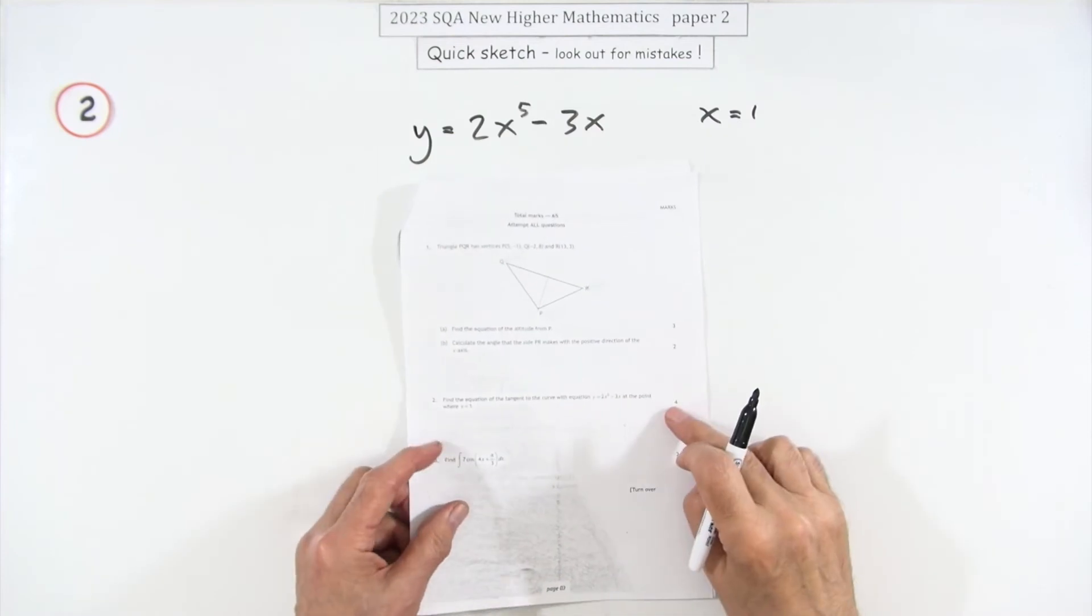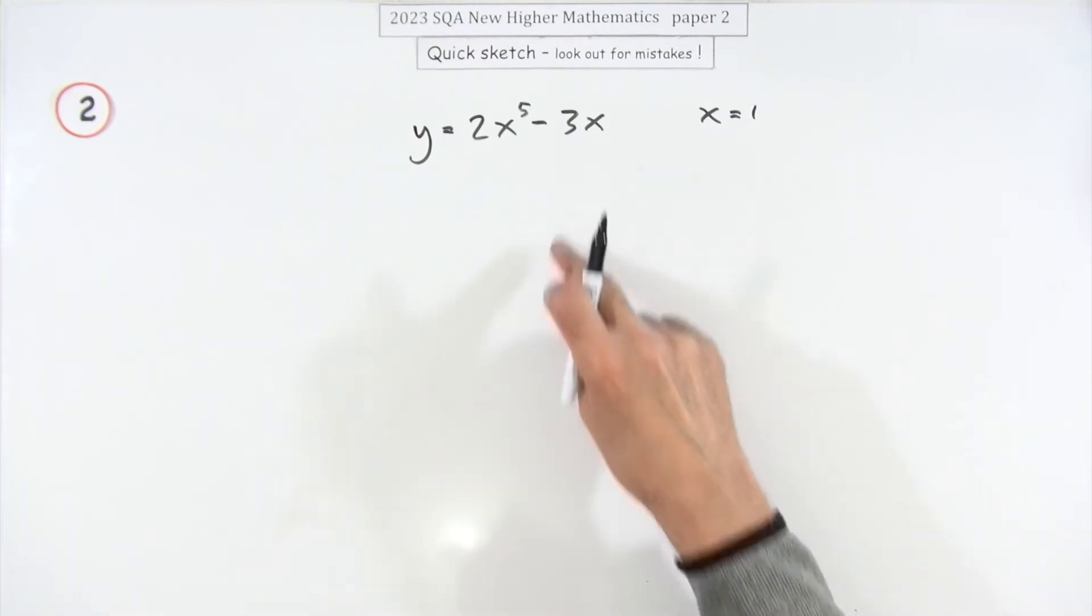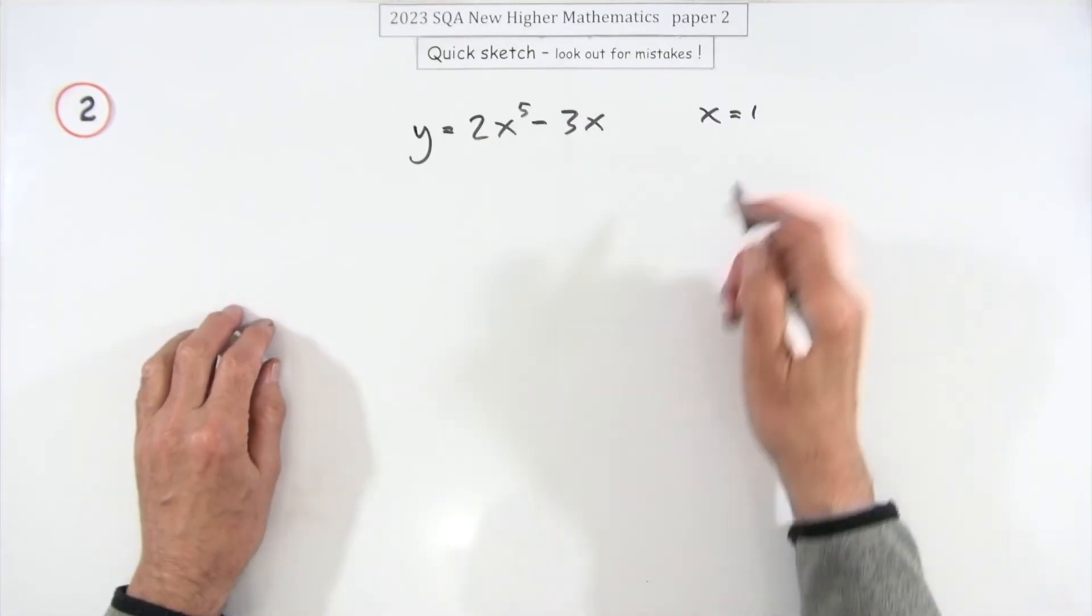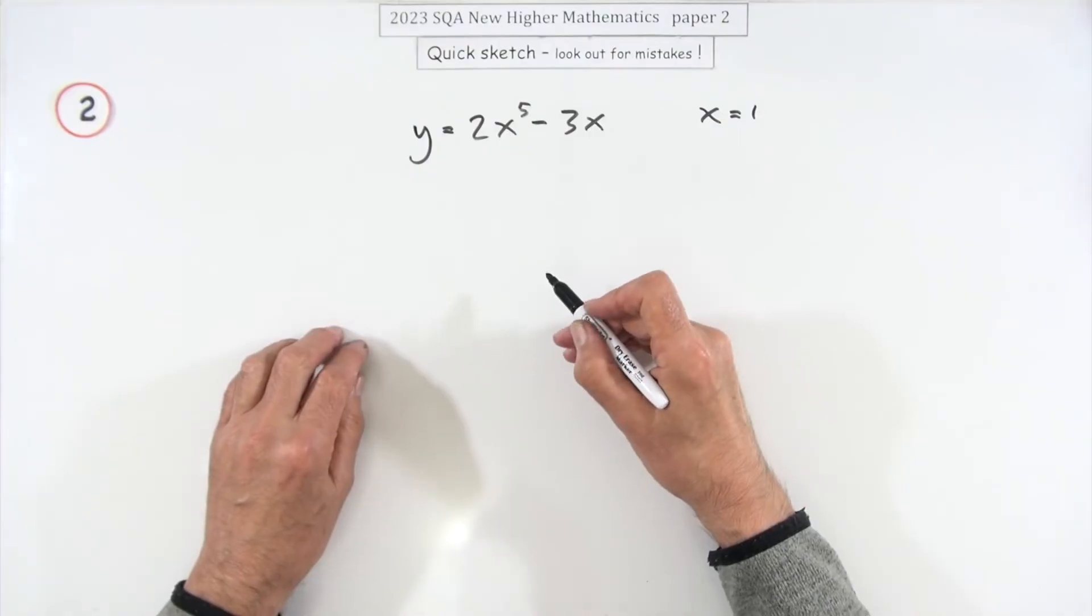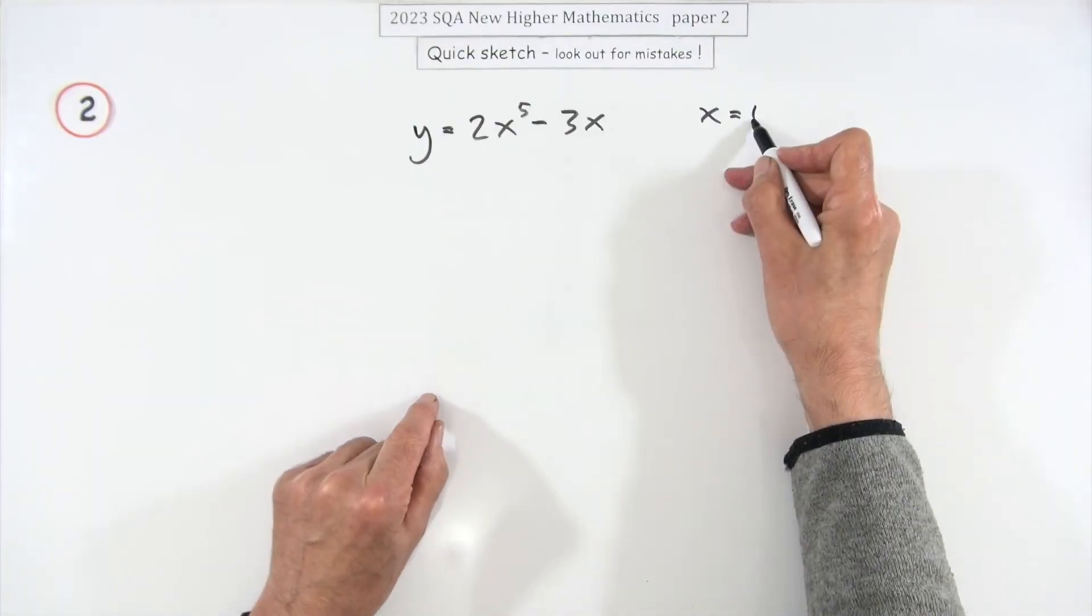Number two then, for four marks, the equation of a tangent to a curve. That's that little standard then, and it's a particularly easy example of that little standard. X is only one here.